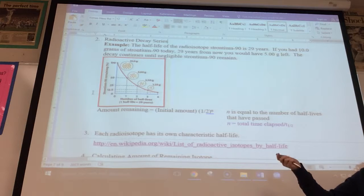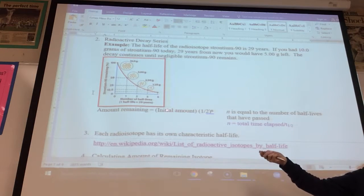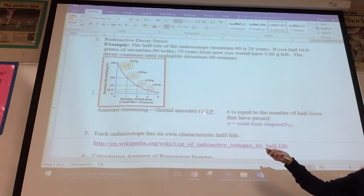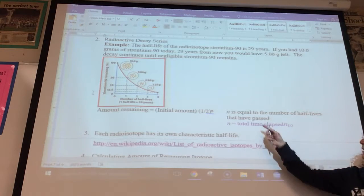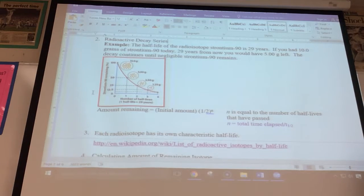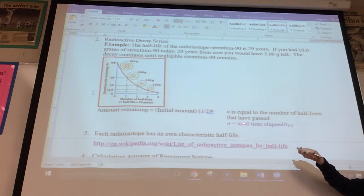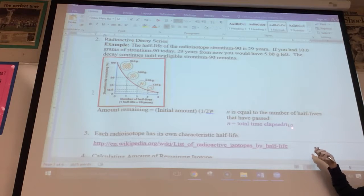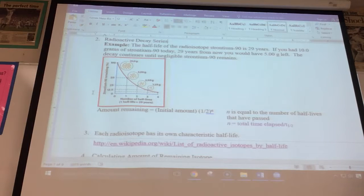For example, with amount remaining, this is the initial amount, that's what you started with, times one half to the n power, where n is equal to the number of half-lives that the sample has gone through. You can calculate n by dividing the total time that has elapsed by the half-life. That'll give you n, so one half to the n power, times whatever amount you started with.